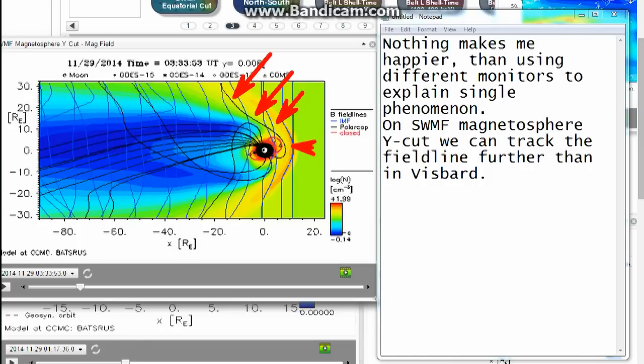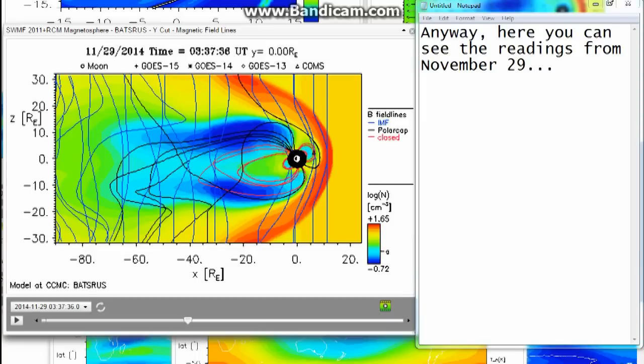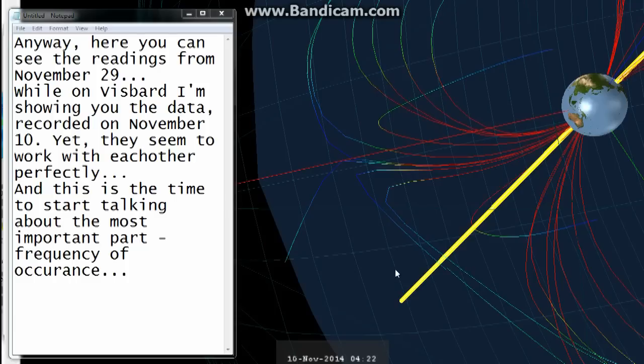Nothing makes me happier than using different monitors to explain a single phenomenon. On SWMF magnetosphere YCAT we can track the field line further than in Visbart. Anyway, here you can see the readings from November 29, while on Visbart I'm showing you the data recorded on November 10. Yet they seem to work with each other perfectly. And this is the time to start talking about the most important part: frequency of occurrence.